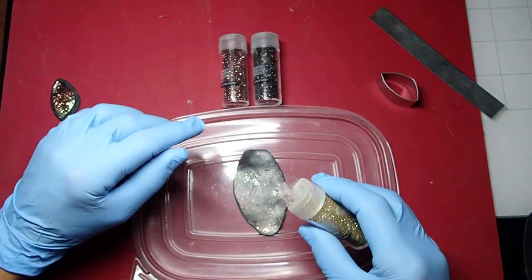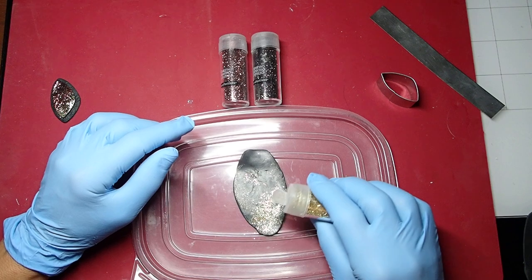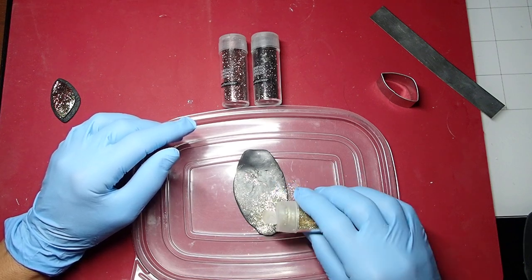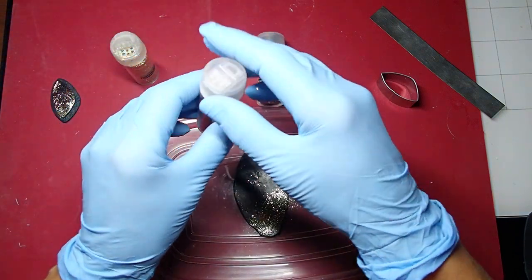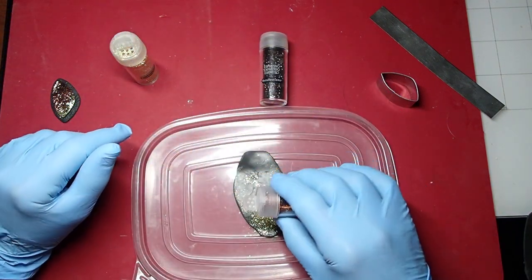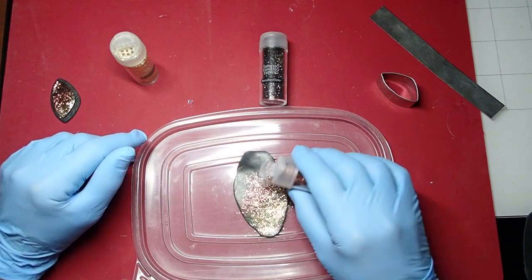Now I'll just start applying glitter to the clay, a little by little. I usually don't use the shaker part, but this is perfect. The shaker part is actually perfect because you want the colors to be overlapping a little bit.